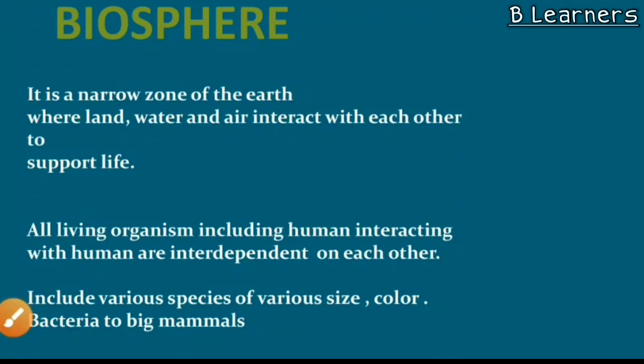We know that each organism is present where they interact with each other, so they are interdependent. Interdependent means that we depend on each other. For example, we know that plants and animals are interdependent and interact with each other.